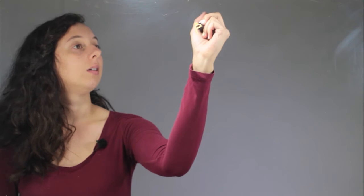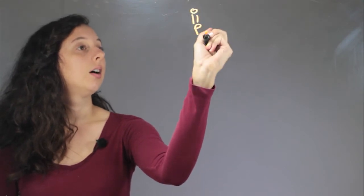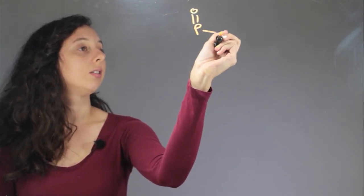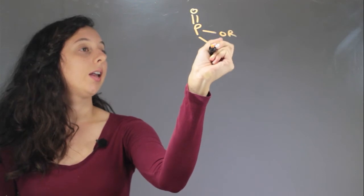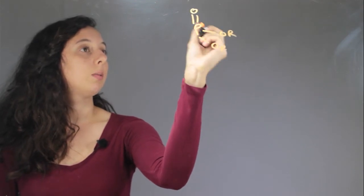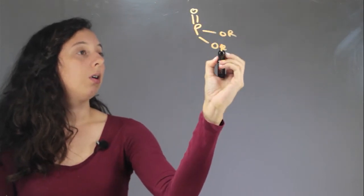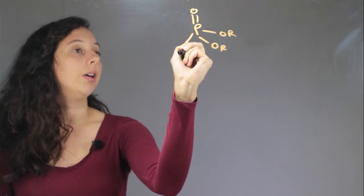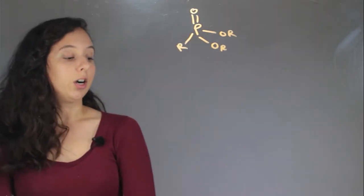Alright, so first of all, a phosphonate group looks like this. Obviously it has a phosphorus in it and it has a double bond to oxygen, then two OR groups and it also has one regular R group.